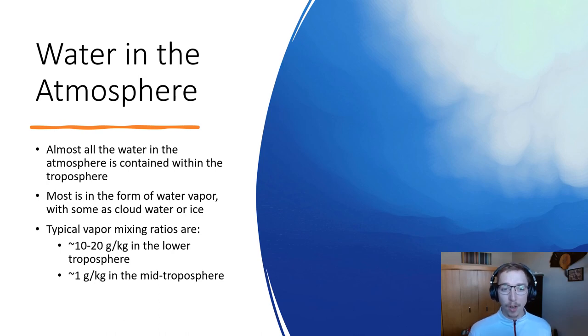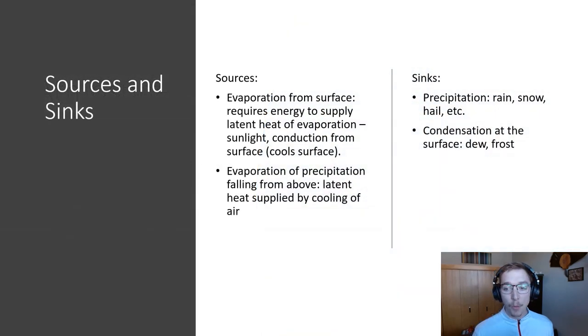And then by the time you get to the mid troposphere, it's about one gram per kilogram. So you can see that the large majority of that water vapor is condensed and held right along the surface or very low in the troposphere. Now if we consider sources and sinks, where water and moisture are coming from and where they are going or what they're being driven or dropped into. Sources we can consider evaporation from the surface and evaporation of precipitation falling from above.